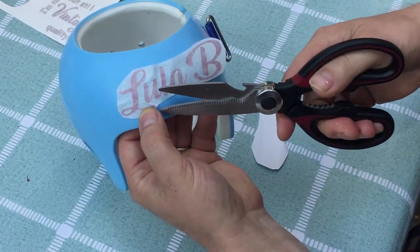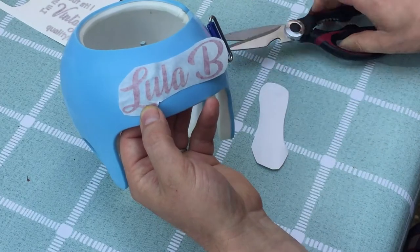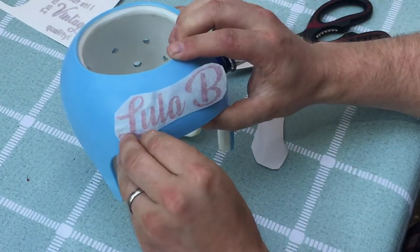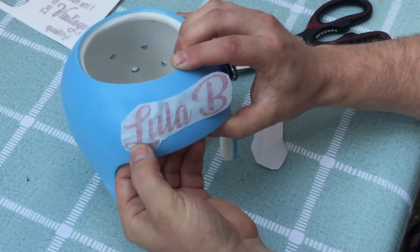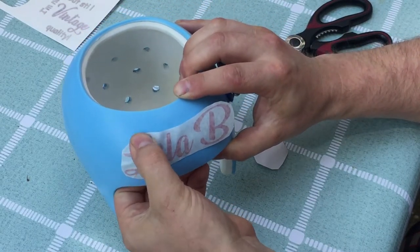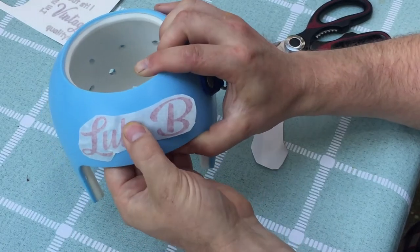Here the transfer tape was kind of getting in the way at the bottom of the L. So I took my fingers and then the scissors just to cut a little notch in the transfer tape section so I could get that bottom of the L to go down where I wanted.